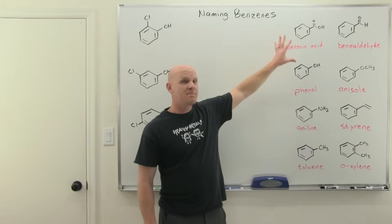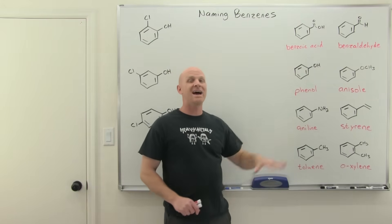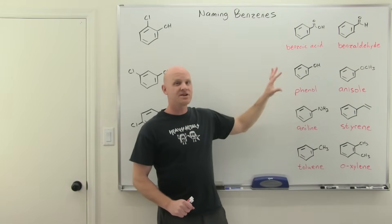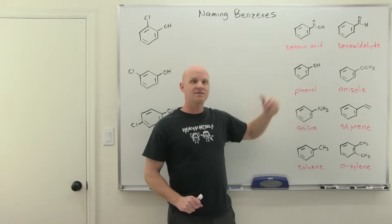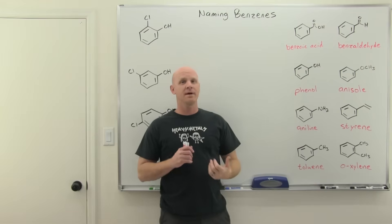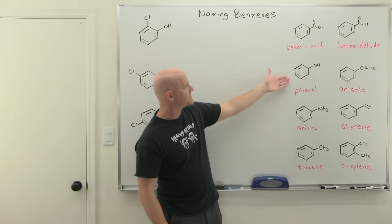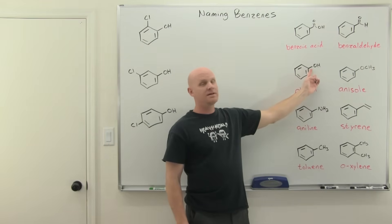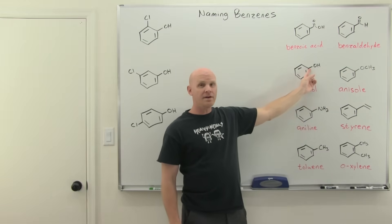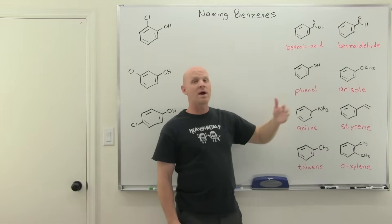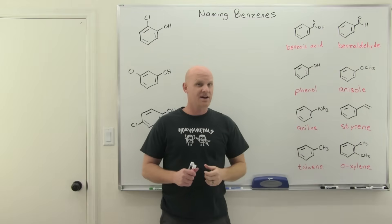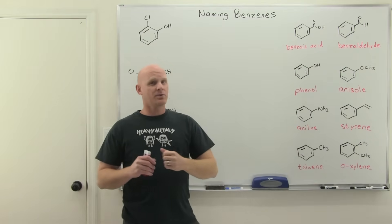When you name a benzene using one of these special names, the substituent that the special name identifies is automatically at carbon number one of the benzene. So if you name something as a phenol, carbon one is where the OH is attached by default. Let's take a look at some di-substituted benzenes that have special names.